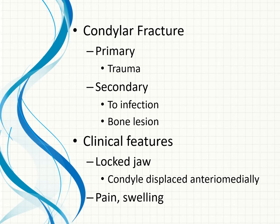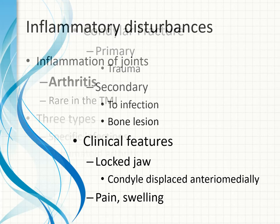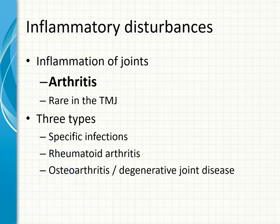Condylar fractures may be primarily due to trauma or secondarily due to infection, odontogenic cyst, or tumor weakening the bone — leading to a pathological fracture. When the condyle fractures, there will be a locked jaw; the condyle is usually displaced anteromedially, rarely laterally or posteriorly. There will be pain, swelling, and hematoma in the region, resulting in inability to open the jaw.